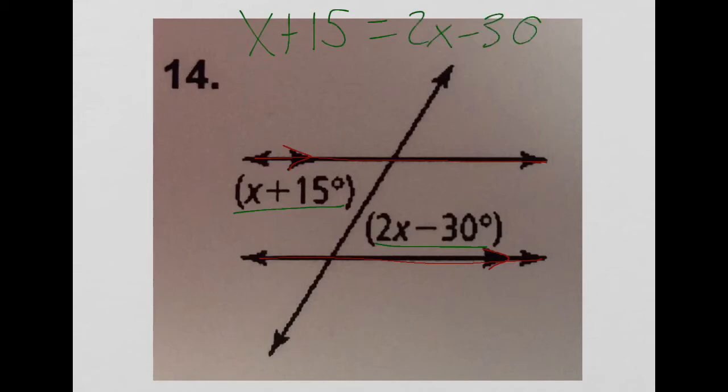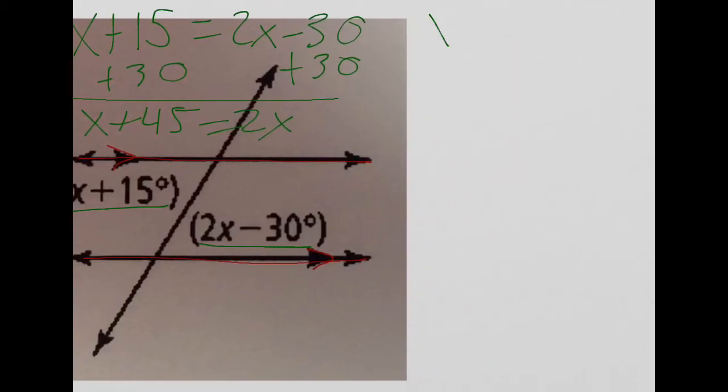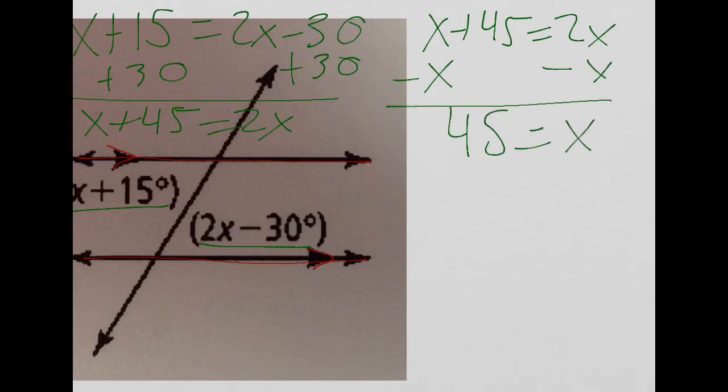To solve for x here, I'm going to combine some like terms. So I'm going to add 30 to both sides, and I end up with x plus 45 equals 2x. I'm going to scoot over here so I have some extra room, so I have x plus 45 equals 2x. I'm going to subtract x from both sides, and I end up with 45 equals x. There is my answer.